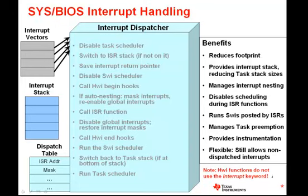Although the dispatcher is implemented for you by SysBIOS, I think there is good value in seeing what actually goes on inside, so I'm going to spend a few minutes walking through the dispatcher execution. The first thing that the dispatcher does after it is vectored to is disable the task scheduler. The reason for this is that we don't want any tasks that are made ready to run to preempt the hardware interrupt processing, since Hwis, by definition, are treated as an implicitly higher priority thread. I should also mention that this call to task disable is optimized out of the dispatcher if the task module is not enabled, in order to make the execution of the dispatcher as efficient as possible.